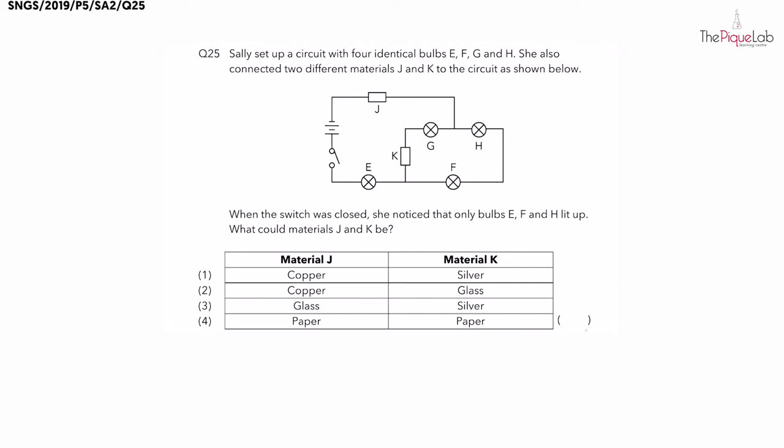Question 25. Sally set up a circuit with four identical bulbs E to H and she connected two different materials J and K into the circuit as shown below.